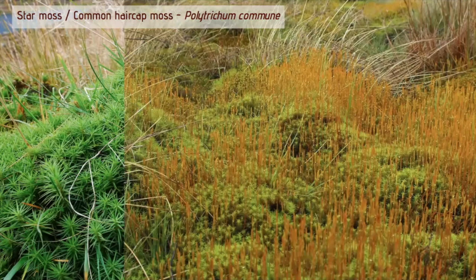Polytrichum commune has quite a cosmopolitan distribution, found right across the world. It loves damp, acidic, base-poor places, can tolerate moderate shade, some levels of pollution, and nutrient enrichment. It's found on wet moors in the uplands but also frequently in lowland Britain — in the west, in wet woodlands, bogs, ditches, and lake margins. Polytrichum do have the ability to draw water up through specialised tissues that conduct water from the base of the plant around the outside of the stems.